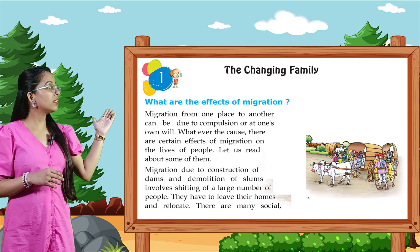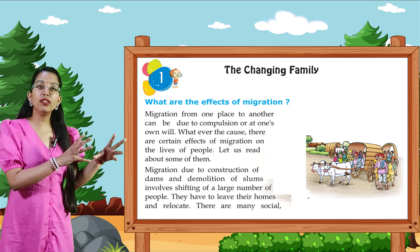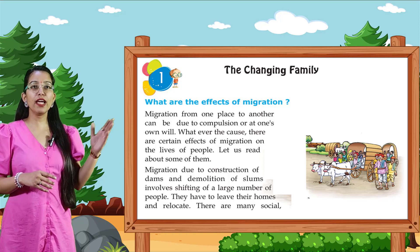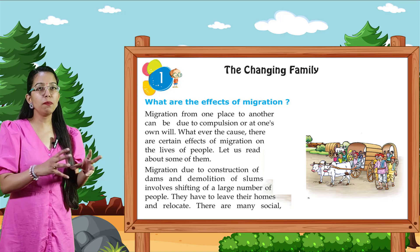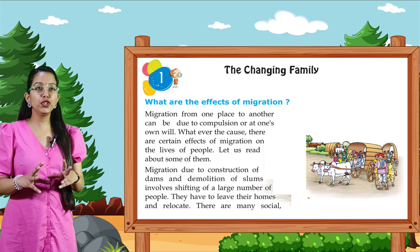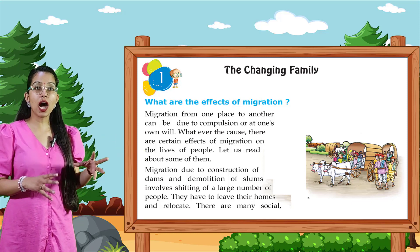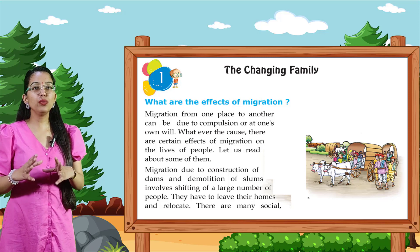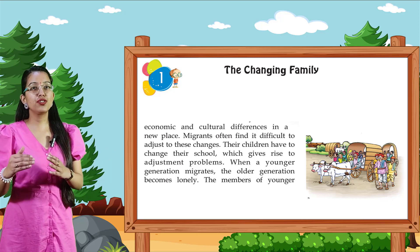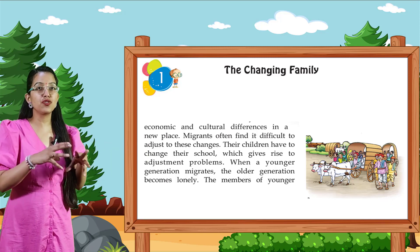Next topic: what are the effects of migration? Migration from one place to another can be due to compulsion or at one's own will. Whatever the cause, there are certain effects of migration on the lives of people. Let us read about some of them. Migration due to construction of dams and demolition of slums involves displacing a large number of people. They have to leave their homes and relocate. There are many social, economic, and cultural differences in a new place.